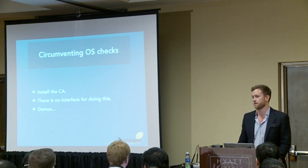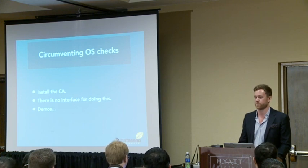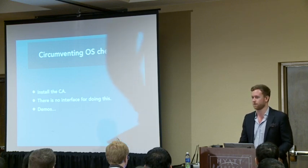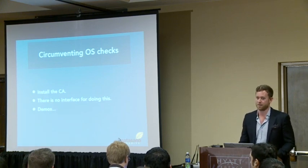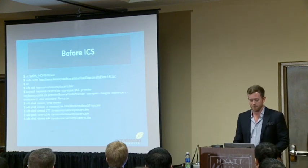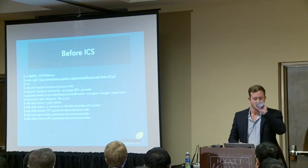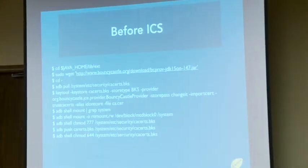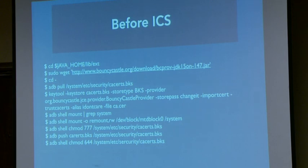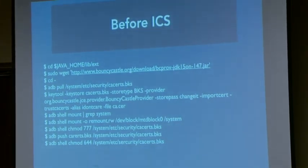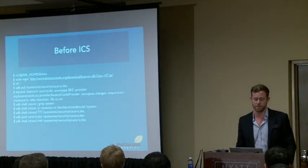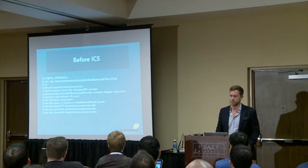The Android operating system has a local trust store. There are two different versions depending on which version of the OS you use, and there's no interface for installing certs. It's either a Bouncy Castle file you have to import the cert into, or a directory that has text-based certs. Before Ice Cream Sandwich, you'd have to install the Bouncy Castle libraries, pull the cert, use Bouncy Castle to import your cert, remount the system partition to have read-write access, change the permissions for the current CA cert, push the new one up, and change the permissions back.